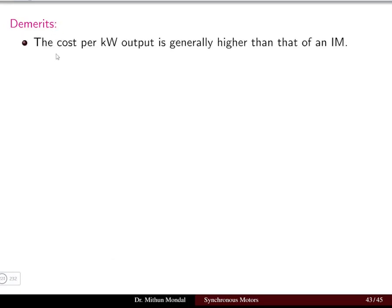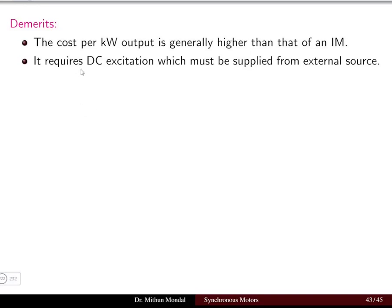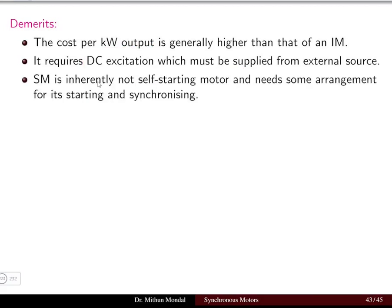Having known the merits, we now discuss the demerits. The first demerit is that the cost per kilowatt output is generally higher than that of an induction motor. The second demerit is that it requires DC excitation which must be supplied from an external source — requiring two types of supply: DC for the field winding and AC for the stator winding.